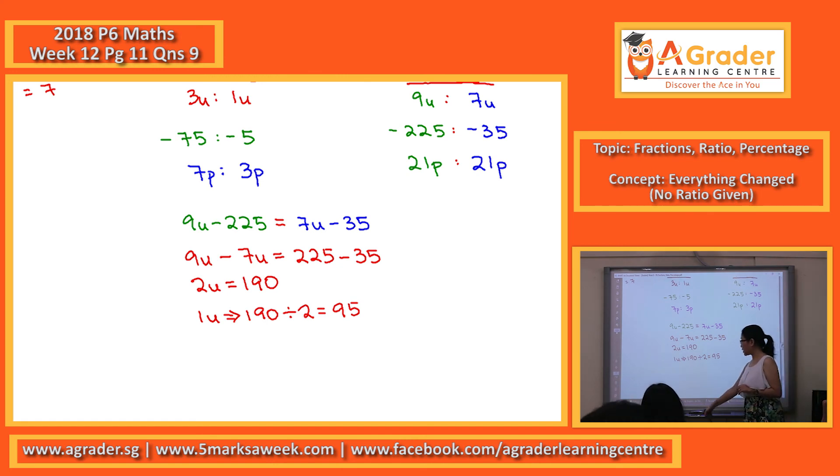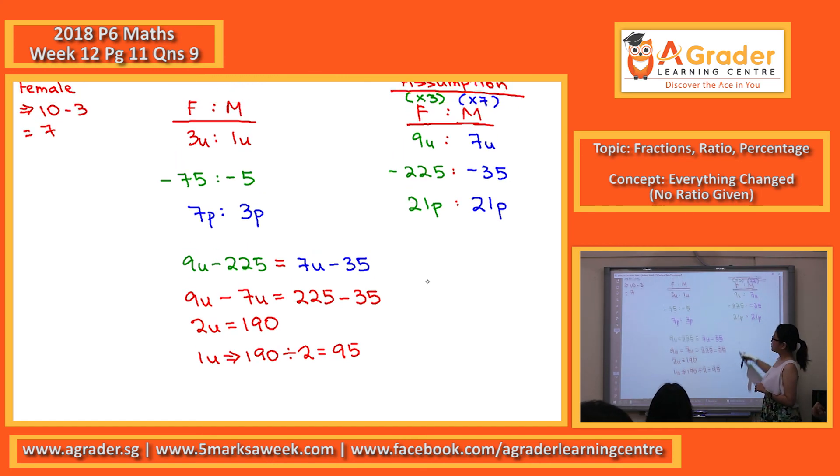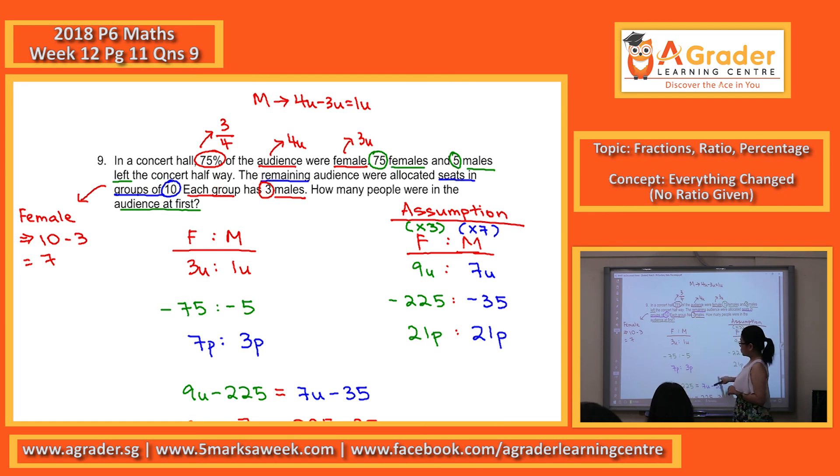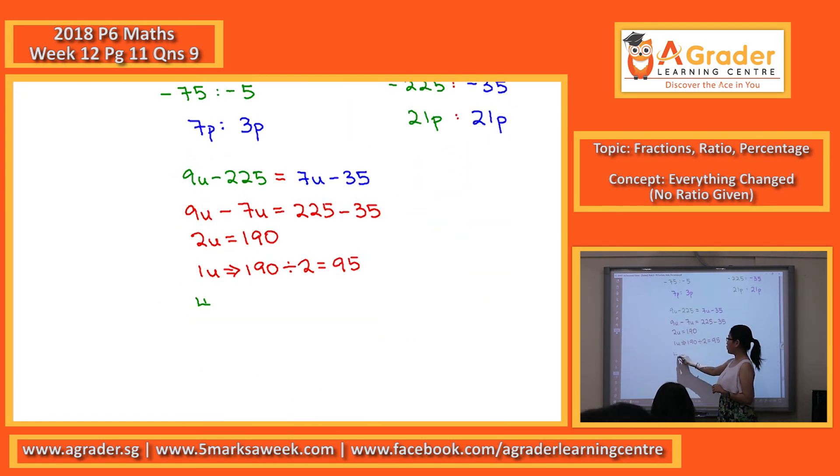The question asks for the people in the audience at first. Total audience at first. Your number is the 4U. So we can look for 4U, 95 times 4. Final answer 380.